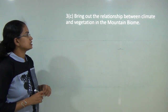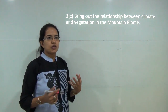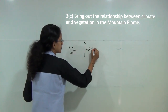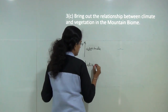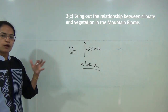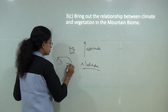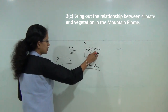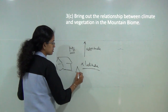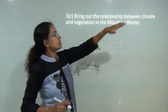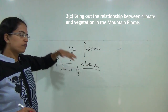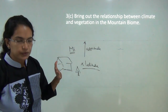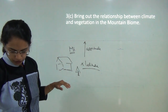The next question is to bring out the relationship between climate and vegetation in a mountain biome. In a mountain biome, the primary focus is altitude, not latitude. As you go higher, the region becomes devoid of vegetation — tundra-type vegetation occurs at the top of the mountain due to low pressure and low temperatures. Conifers are also present in these zones.